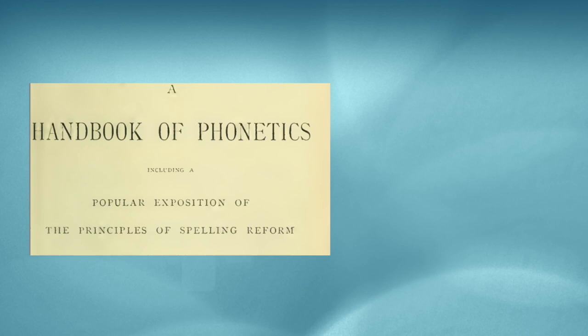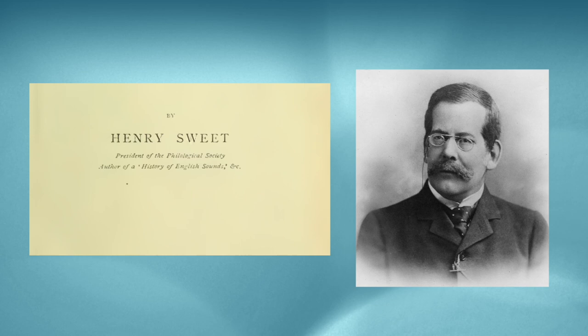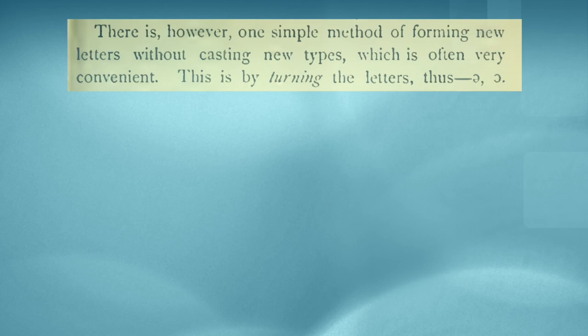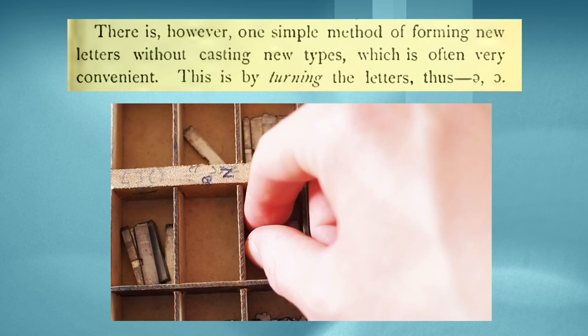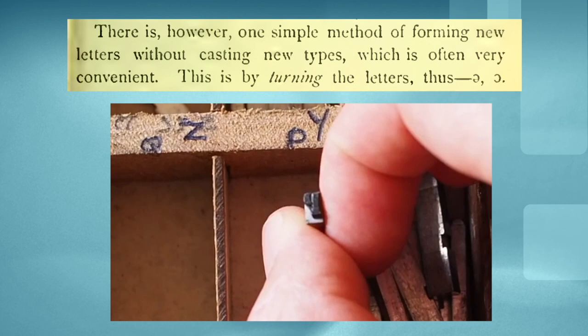So phoneticians came up with a clever and much cheaper idea. The great Henry Sweet, who laid the foundations for the IPA, described this idea in 1877. There is, however, one simple method of forming new letters without casting new types, which is very often convenient. This is by turning the letters, thus.